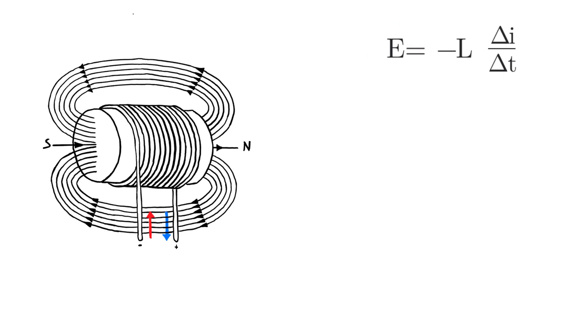Here we have E, which is the induced voltage, is equal to negative L, that's going to be the inductance of the inductor. This delta I is going to be your change in current and delta T is the amount of time, the change in time that you're using.